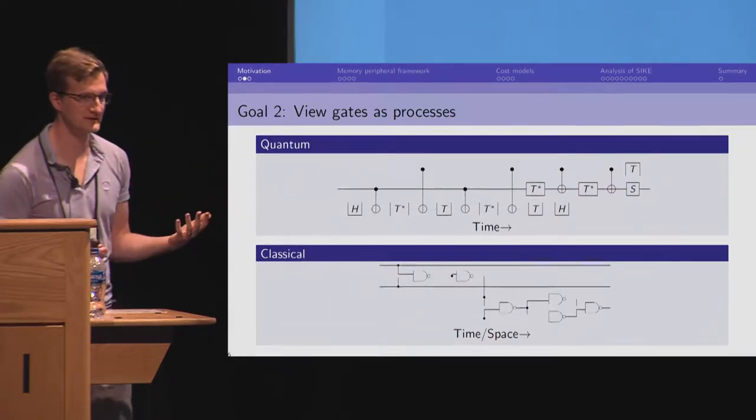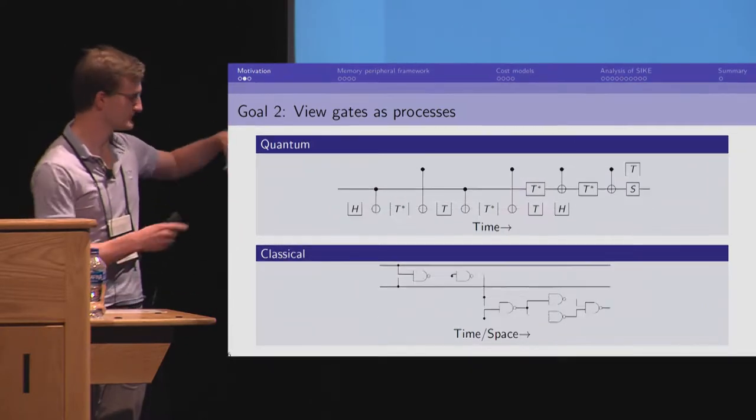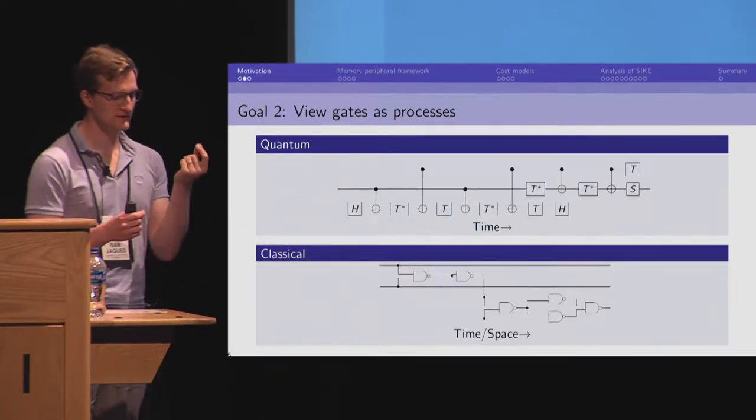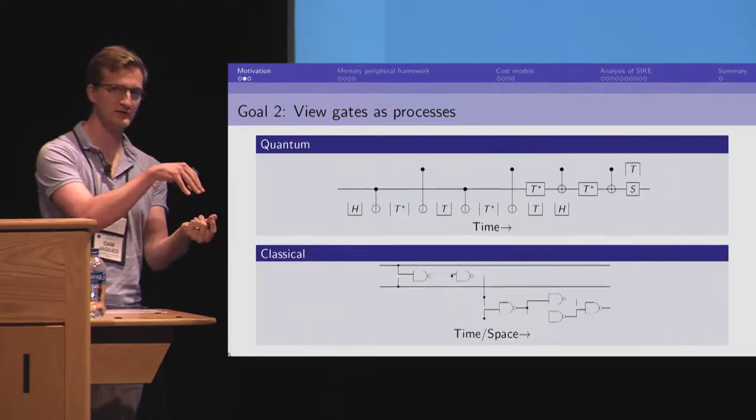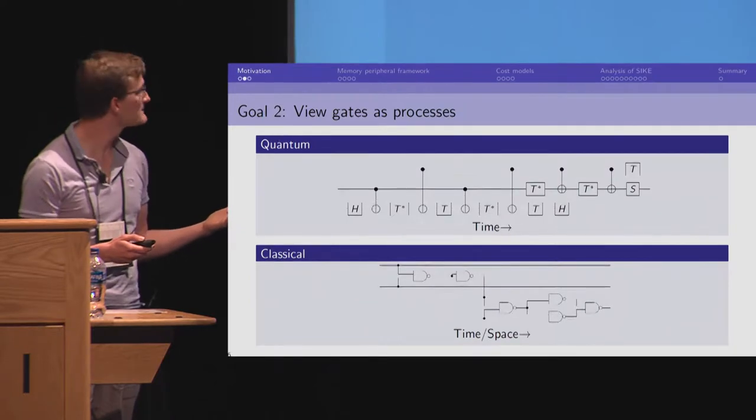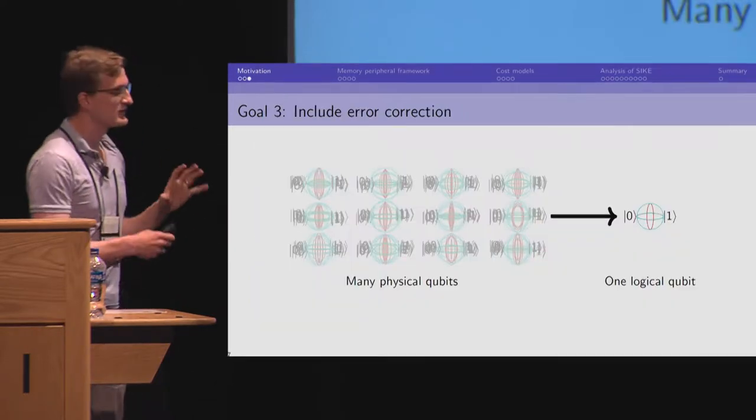And right now, the promising quantum technologies do not look like the classical two-dimensional circuits. It's that the qubits themselves are stationary, they're not a signal moving, and you have to apply a gate to it. So, we want our model to accommodate that.